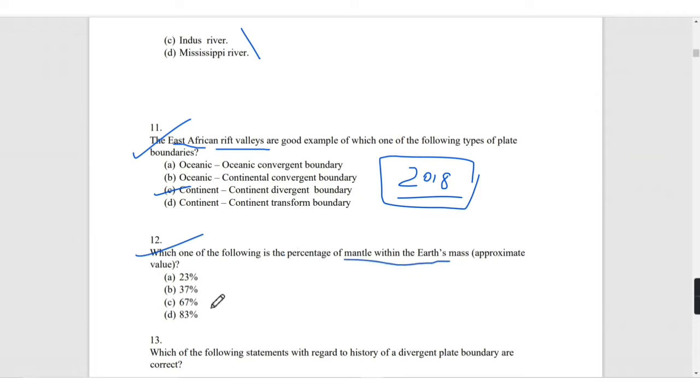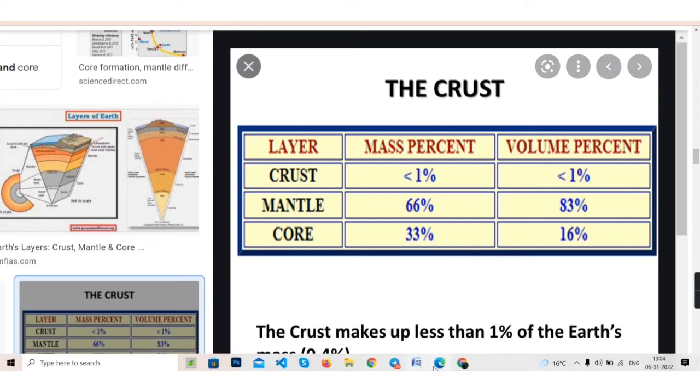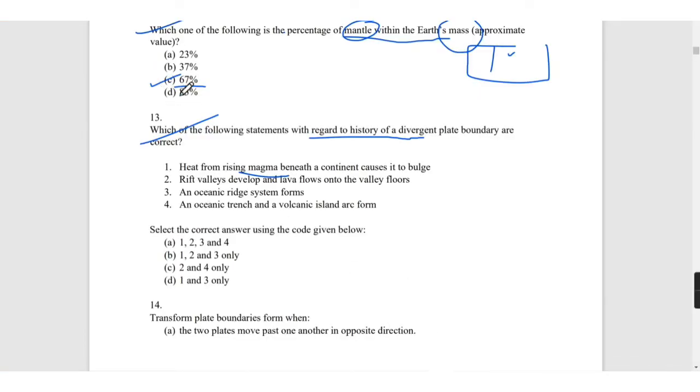Which of the following is the percentage of mantle within the earth mass? It is 67 percent. The crust consists of less than 1% of mass percent. Mantle consists of 66% mass percent of crust, core consists of 33 mass percent. If you see the volume percent, it will be less than 1% for crust, 83% for the mantle, and 16% for the core. You have to remember this table.